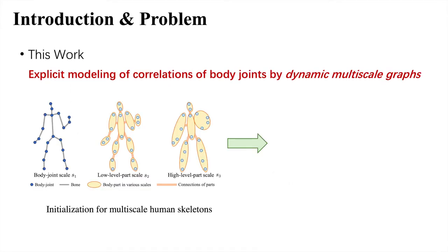To address this problem, in this work we propose to represent human bodies in multiple scales, such as joint scale, low-level part scale, and high-level part scale, where joint scales carry detailed dynamics for individual joints, and the coarser scales carry more abstract motion states performed by the functional groups of joints.